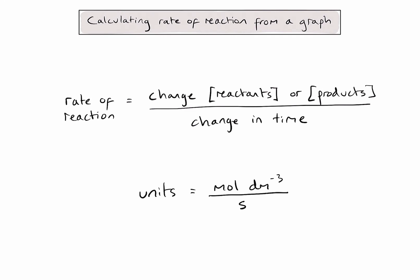In order to calculate the rate of reaction from a graph, it's useful to first remember what we mean by rate of reaction. We are interested in how the concentration of reactants or products change over time. And because we normally talk about concentration in units of moles per decimetre cubed and time in seconds, the units are almost always going to be moles per decimetre cubed per second.